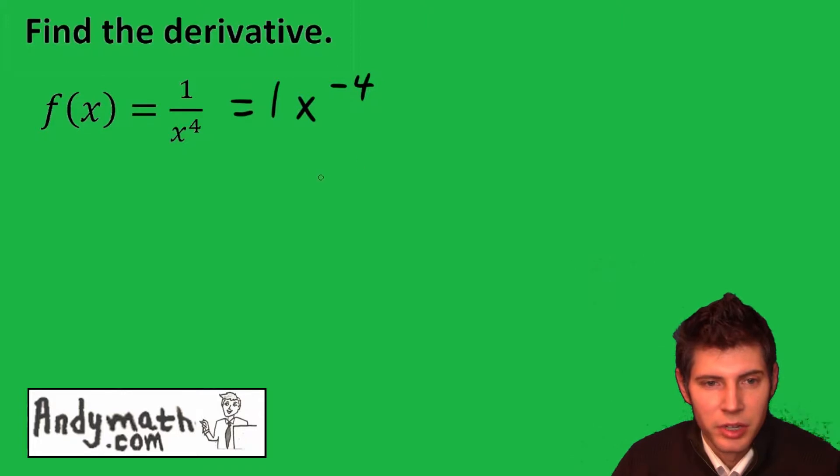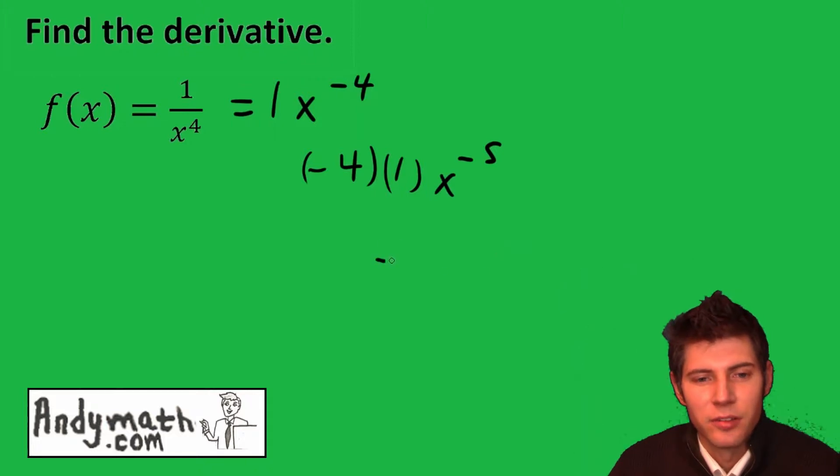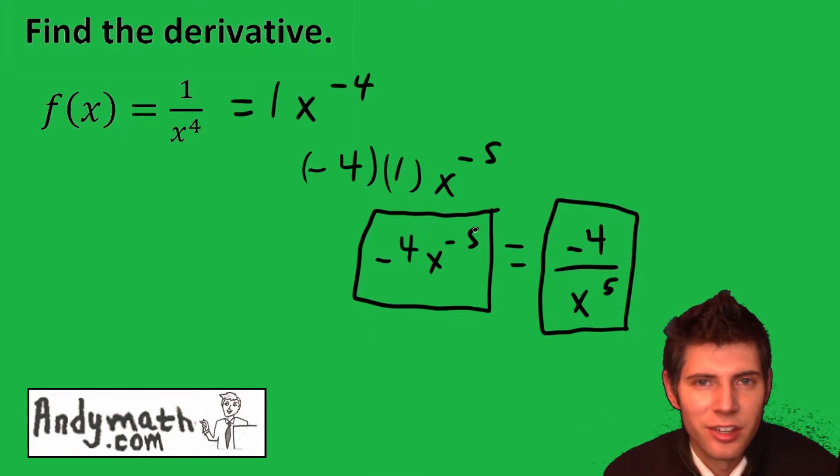Now we can just take the derivative of this. Bring the negative 4 in front and then subtract 1 from it. To clean this up, we get negative 4x to the negative 5th. Or you could rewrite it as negative 4 over x to the 5th. Either of these is the answer to the question.